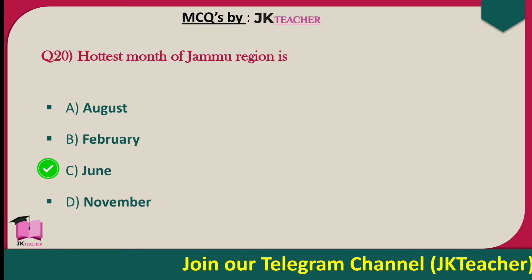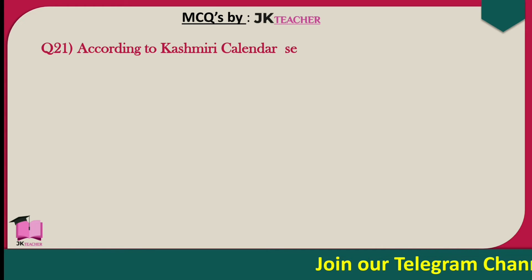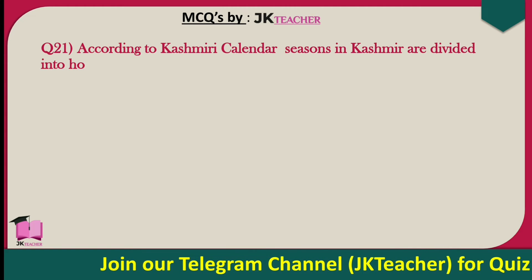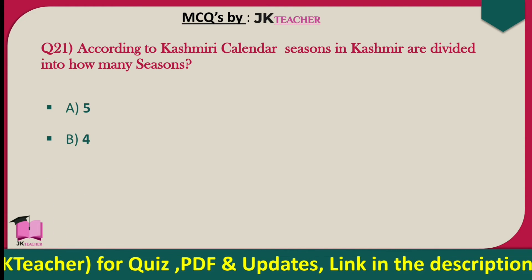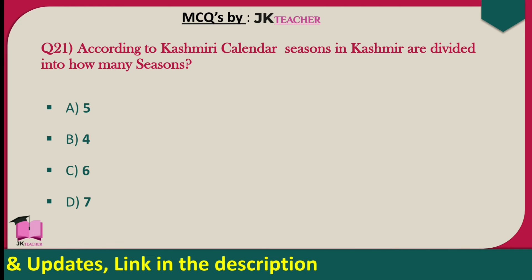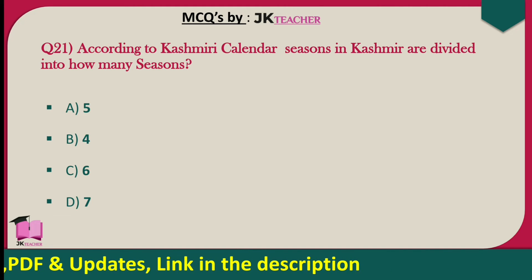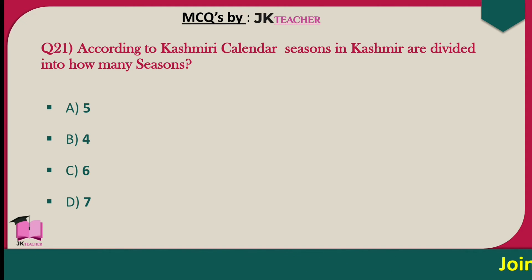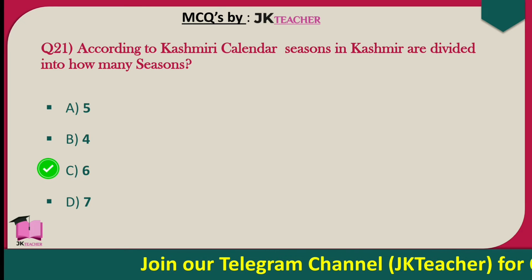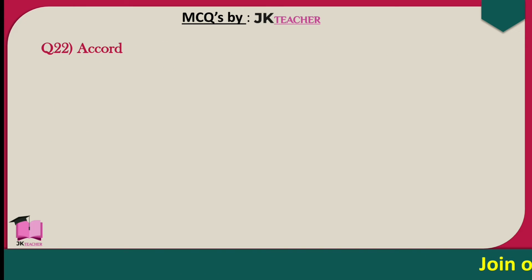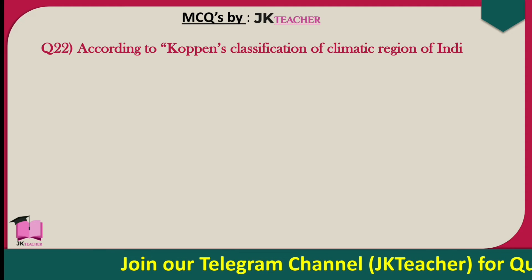According to the Kashmiri calendar, seasons in Kashmir are divided into how many seasons? Options are five, four, six, and seven. The right answer is option C — six seasons.